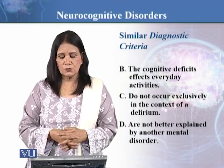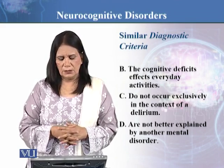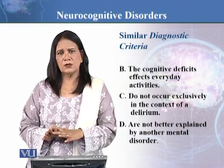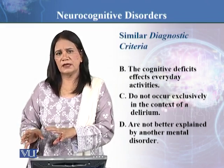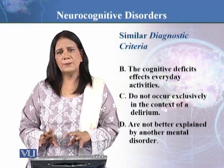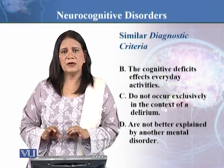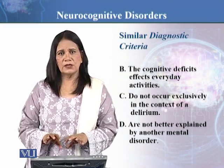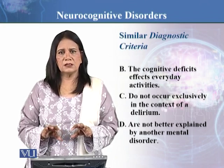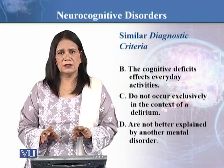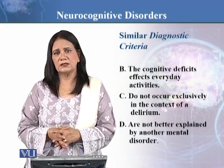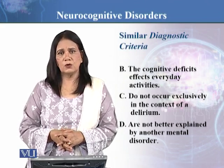Criterion C: the deficits do not occur exclusively in the context of delirium. Criterion D: the deficits are not better explained by another mental disorder — if they are, it would not be diagnosed as a neurocognitive disorder. As mentioned earlier, other mental disorders may have neurocognitive deficits but they are not the main feature, whereas in neurocognitive disorder, the cognitive deficit is the main feature. These are the similar diagnostic criteria which one needs to consider prior to diagnosing somebody with a neurocognitive disorder.